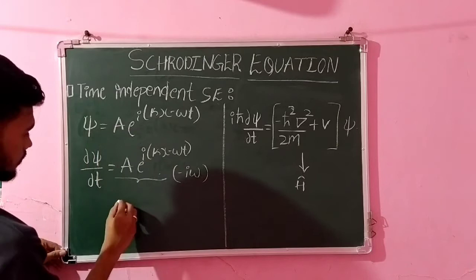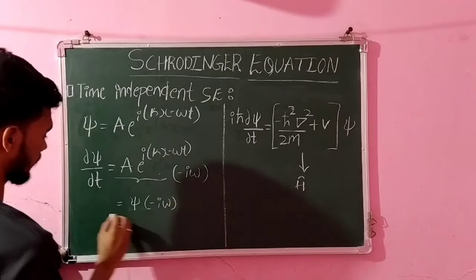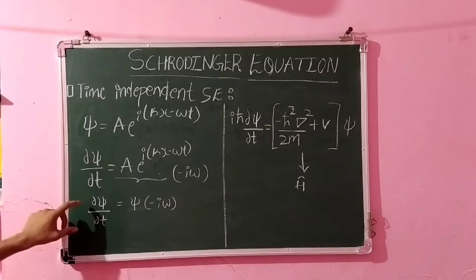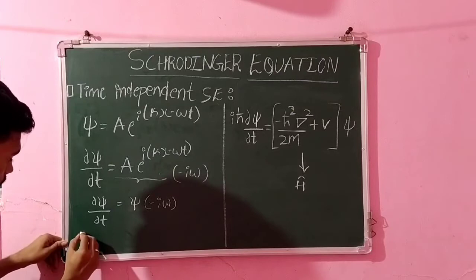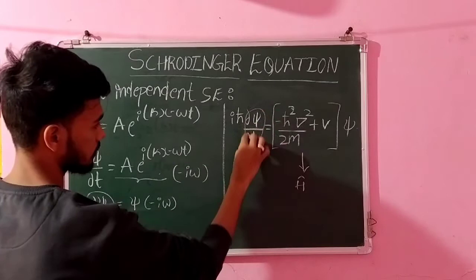So this can be written as psi times -iω. After differentiating we will get this equation. So substitute this equation in this one. So we will get iℏ∂ψ/∂t, just substitute in this place. So we will get -iω times psi.